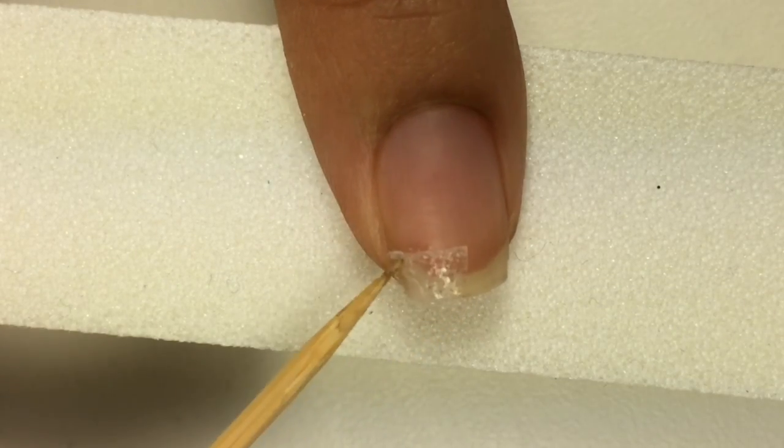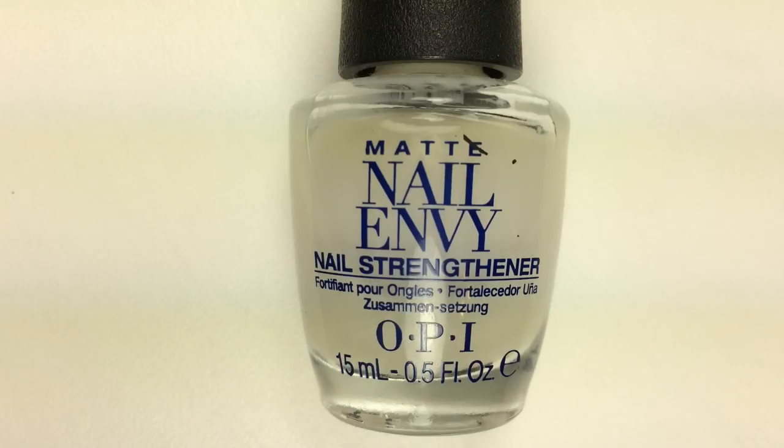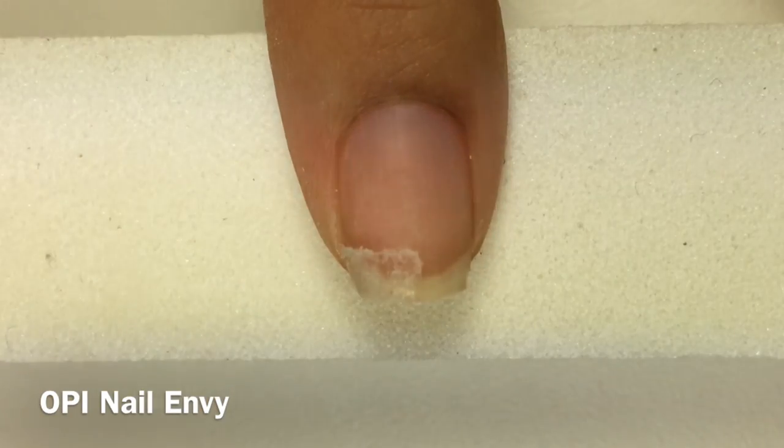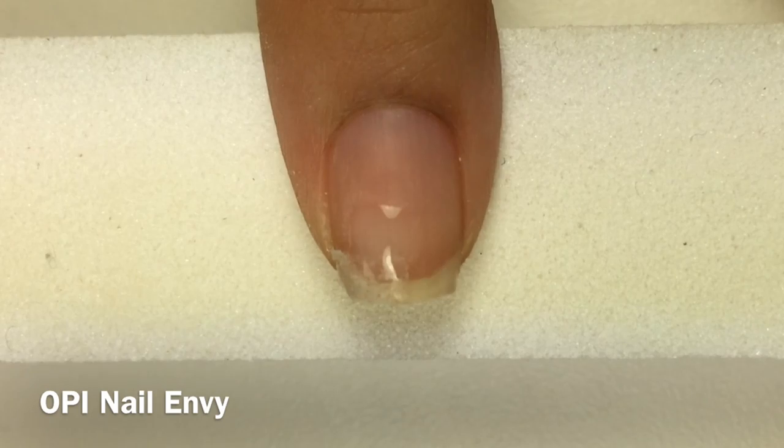Once this is completely dry, I'll take OPI Nail Envy, which is a nail strengthener, and I'll apply it all over my fingernail.